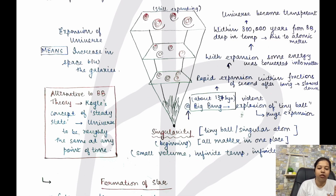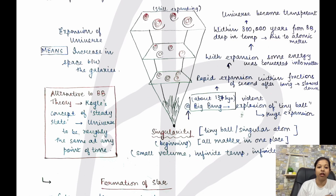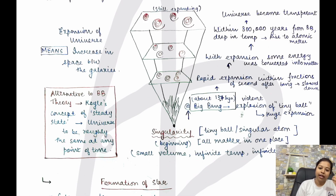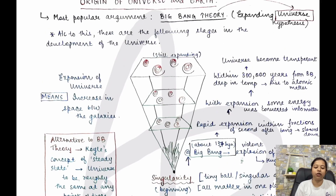There is also an alternative to the Big Bang theory — Hoyle's concept of steady state. In the steady state concept, there is no idea of expansion. The universe is considered to be roughly the same at any point of time — no expansion, just at one position. This is one contradiction to the Big Bang theory, but the most accepted theory remains the Big Bang theory.